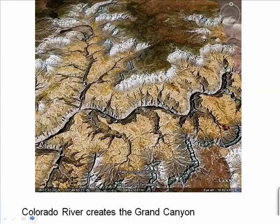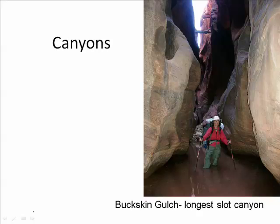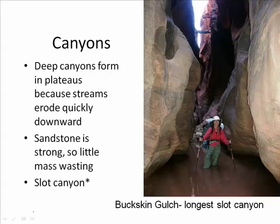In this Google Earth satellite image, you can see the Colorado River creating the Grand Canyon as it carves into the Colorado Plateau. The Colorado Plateau is over 7,000 feet in elevation, giving the Colorado River a lot of erosive power. As a result, the canyons that erode tend to be very steep. Sandstone is one of the layers in Buckskin Gulch — because sandstone has no weak layers, it tends to remain upright as the river carves down, with very little mass wasting.